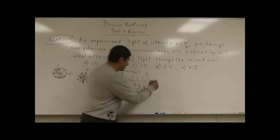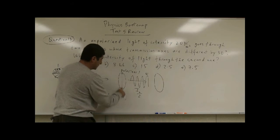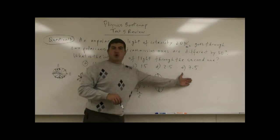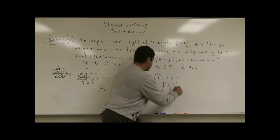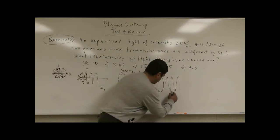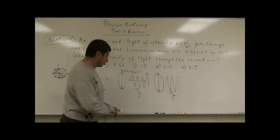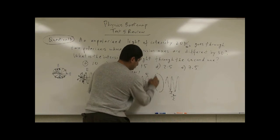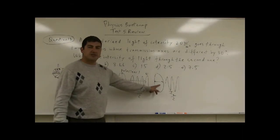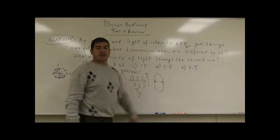Then consider the second polarizer. If that second polarizer is also aligned up and down, then all of the polarized light goes through it, and the intensity remains I₀ over 2. But if the second polarizer only accepts sideways electric field — perpendicular to the first — then nothing gets through, and the transmitted intensity is zero.